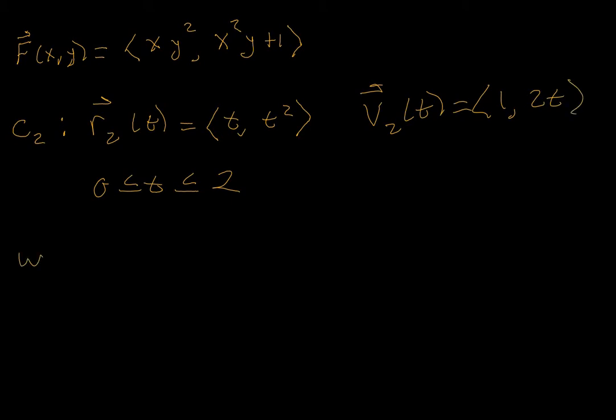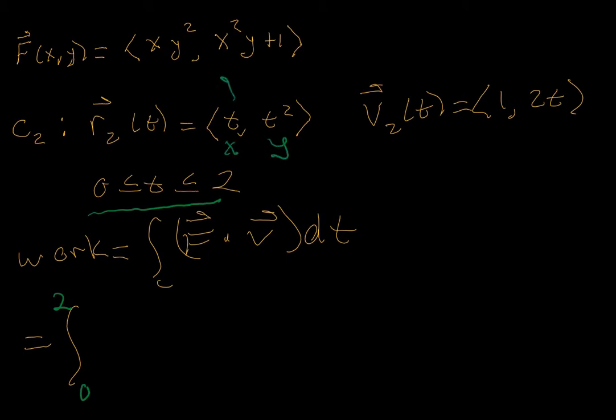And work will be equal to force dot product velocity vector with respect to t. The time interval is from 0 to 2. And this is our x and our y value to be substituted up here. So wherever it says x we plug in t. Wherever it says y we plug in t².